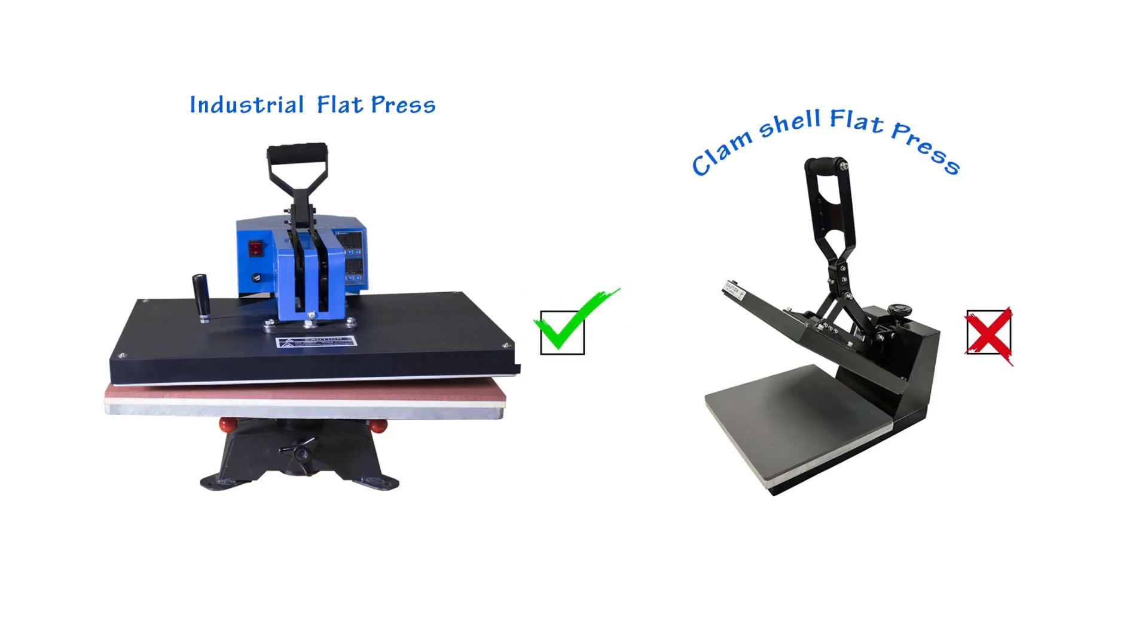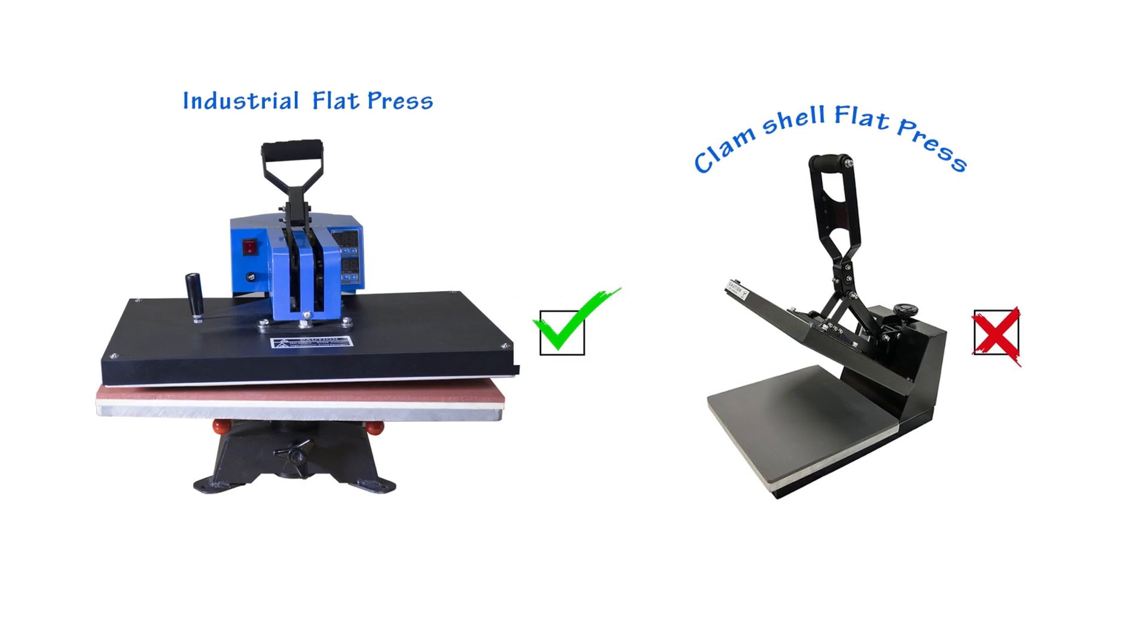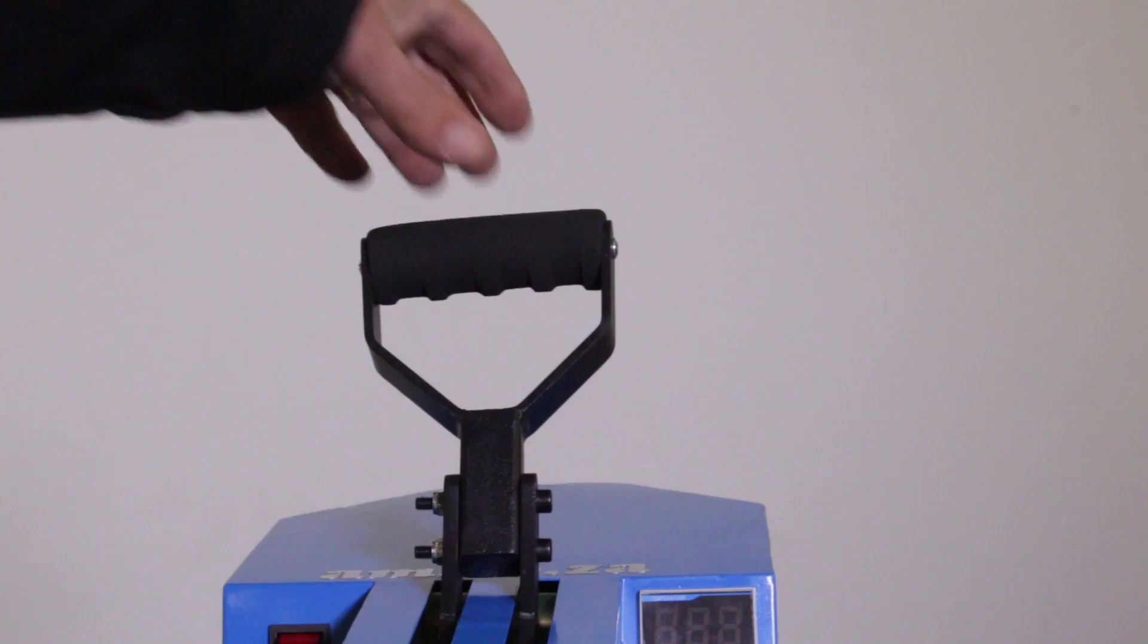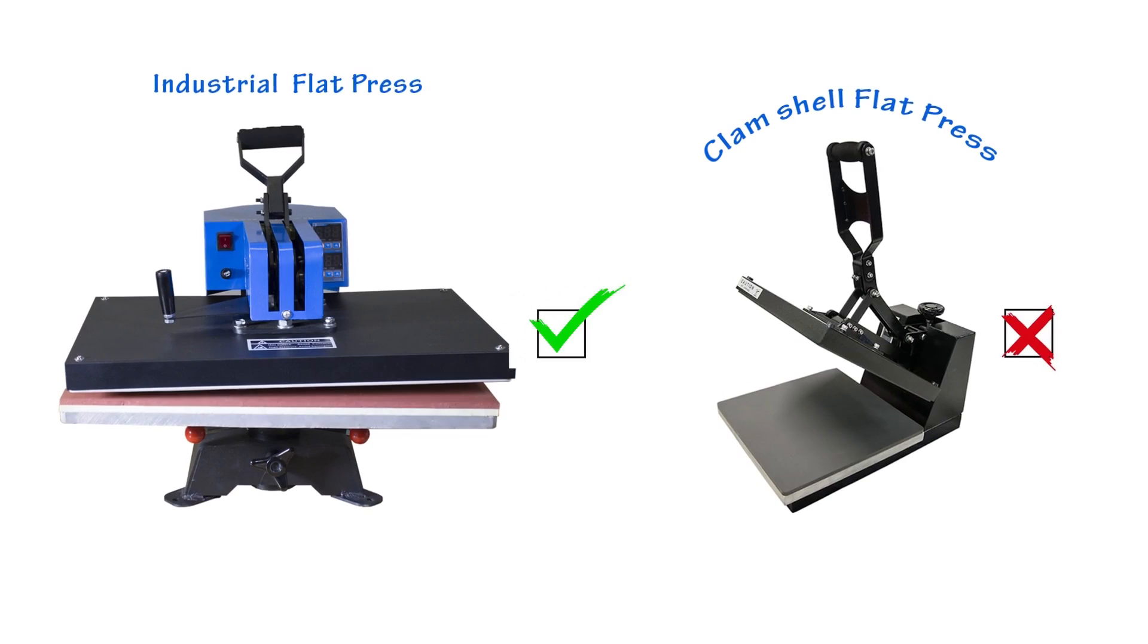Why do you need to buy the swing type of heat press for industrial use? Because with the clamshell type, you're going to burn your hands and the production process will be slow. This rubberized handle is easy to grab and big enough for any sized hand.